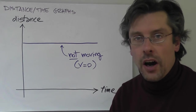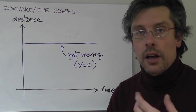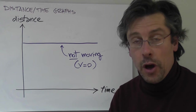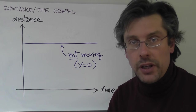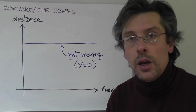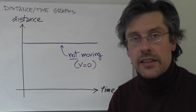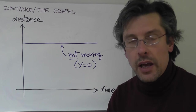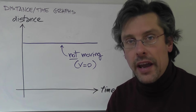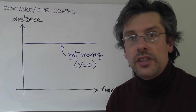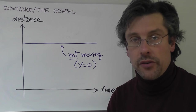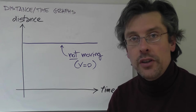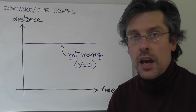So far, we've seen how to calculate the motion of an object. We've seen how to find the speed of an object. We've seen how to find its acceleration. Today we're going to introduce a new way to represent the motion of an object — motion graphs.